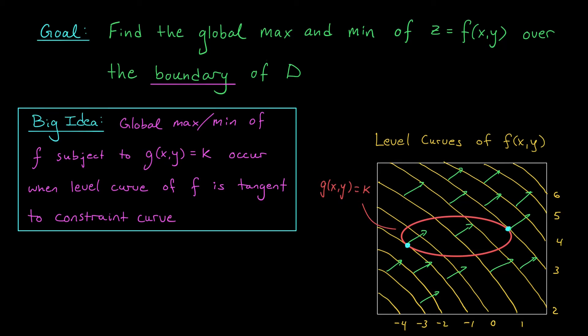But what about g(x,y)? z equals g(x,y) is a perfectly good function, and so we should be able to talk about its gradients as well. The gradients are still going to point orthogonally to the level curves of g(x,y). Ah, but hold on a second. g(x,y) equals k is a level curve.